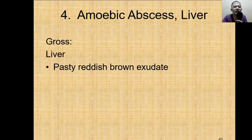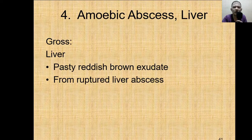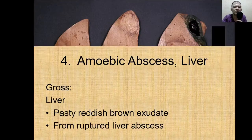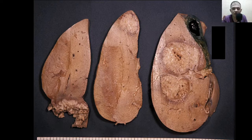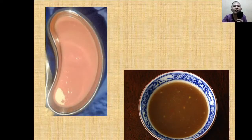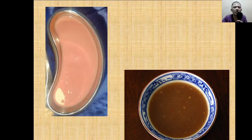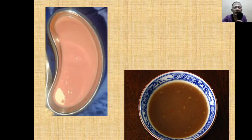Grossly, the liver has a pasty, reddish-brown exudate. You see a liver abscess that has ruptured. More often than not, it occurs singularly — one or two, but not multiple — as one big abscess. The exudate is described as anchovy sauce-like. This is the abscess and this is the anchovy sauce exudate.